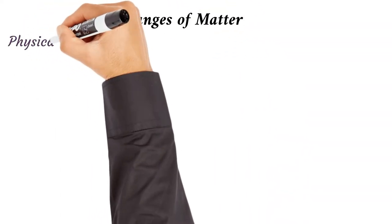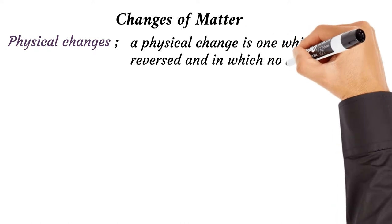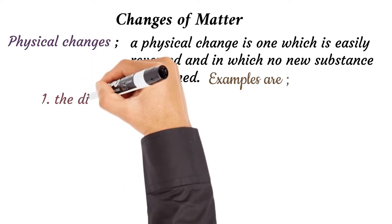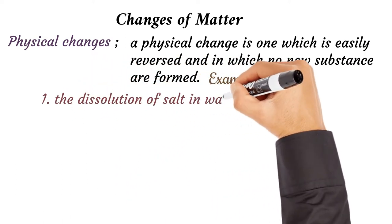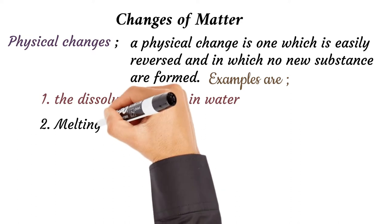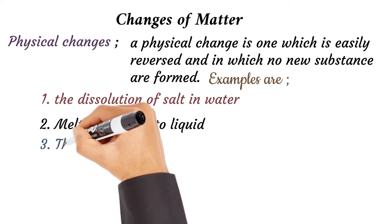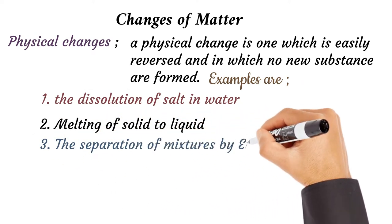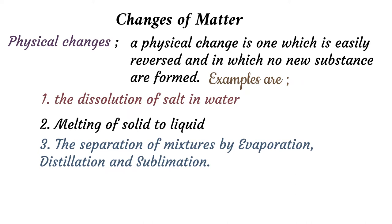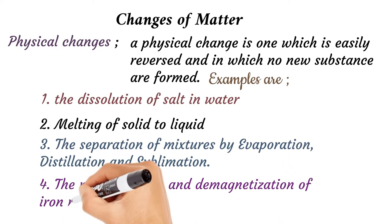Changes of matter: Matter can change from one form to another. We have physical changes, which are easily reversed and in which no new substances are formed. Examples are the dissolution of salt in water, the melting of solid to liquid, the separation of mixtures by evaporation, distillation and sublimation, and the magnetization and demagnetization of iron rods.